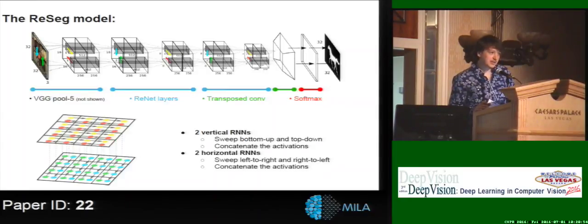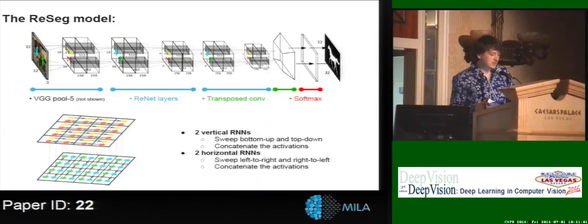On that concatenated feature map we pass over with other two RNNs in the other direction. This allows us to capture the global context as well as the local one.